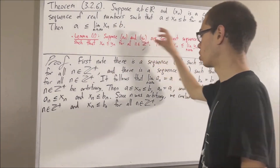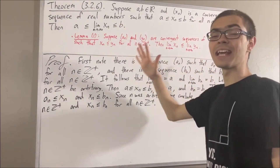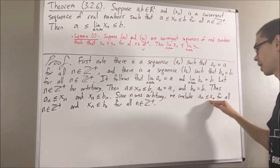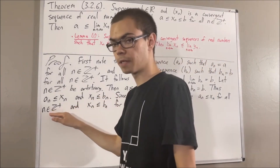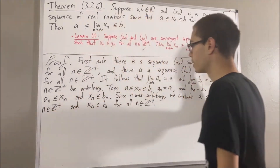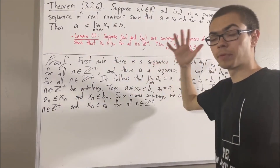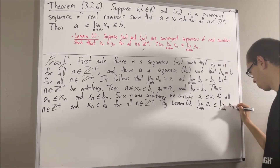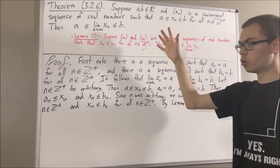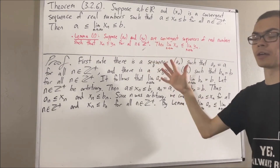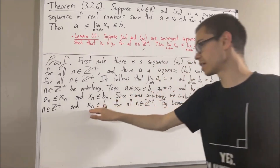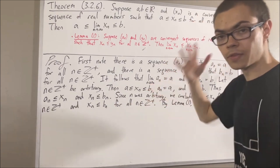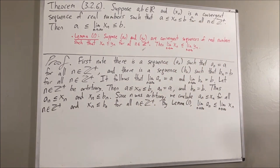And now we can apply Lemma 1. Since an and xn are both convergent sequences, and an is less than or equal to xn for all positive integers n, by Lemma 1, the limit of an must be less than or equal to the limit of xn. Applying Lemma 1 again, we know that xn and bn are both convergent sequences, and xn is less than or equal to bn for all positive integers n. So by Lemma 1, the limit of xn is less than or equal to the limit of bn.